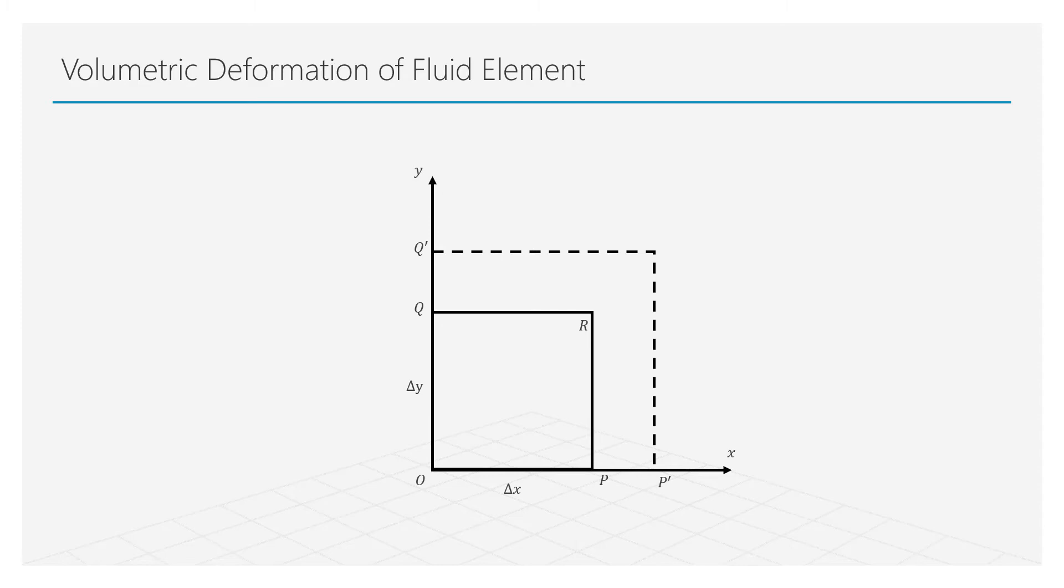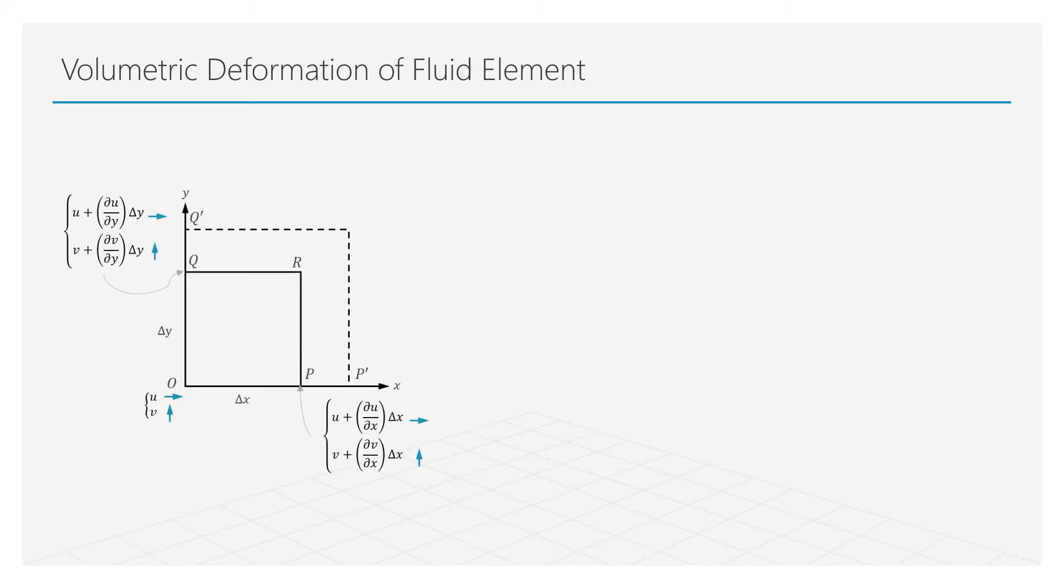To change the length of the fluid element in the x direction, it will require a non-zero value of u-velocity gradient along the x direction. Similarly, change in length in the y direction will require dv over dy to be non-zero. This analysis can be extended to the z direction as well. These individual terms are called components of longitudinal strain in x, y, and z directions respectively.